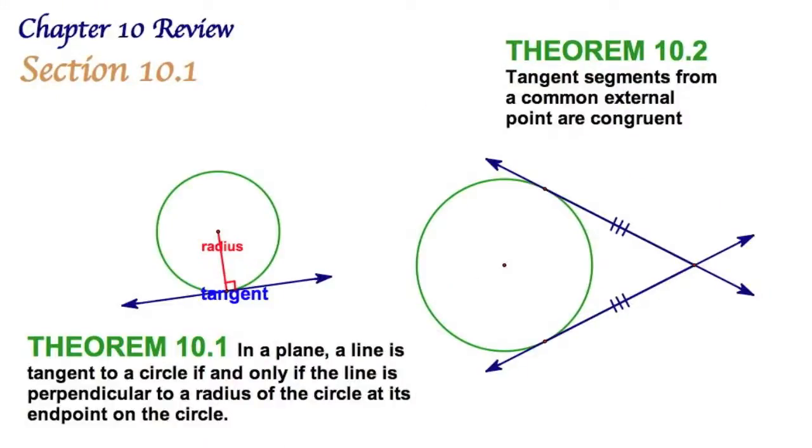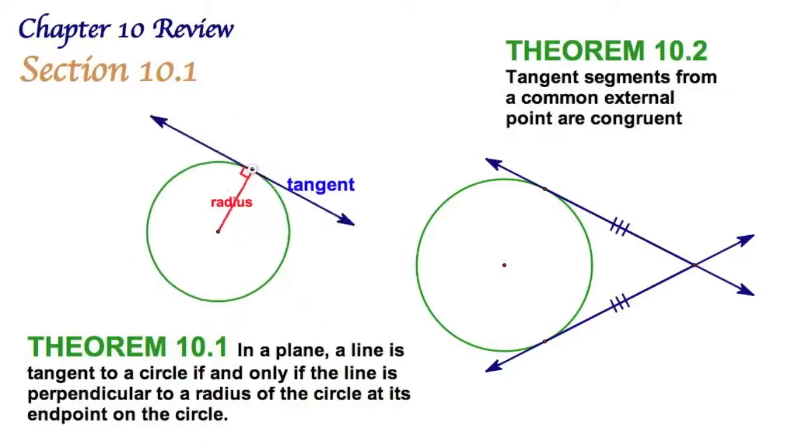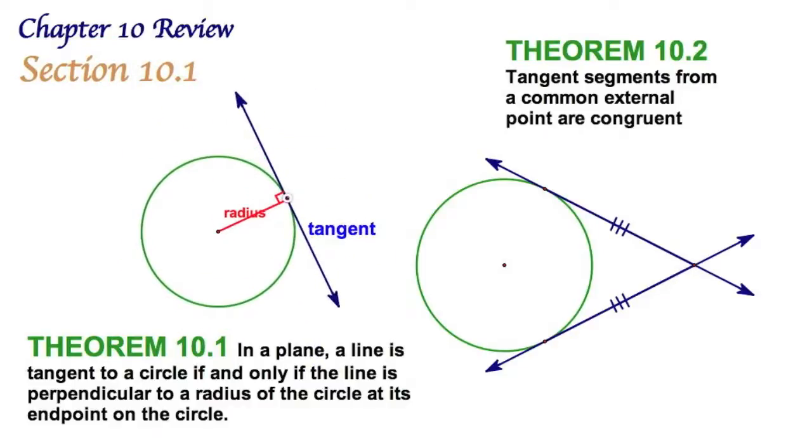Let's begin our chapter review on section 10.1, which was on tangents. We're just touching on highlights of each section - you need to look at everything in depth. A tangent is a line touching the circle in exactly one spot, and it's perpendicular to the radius at that spot.